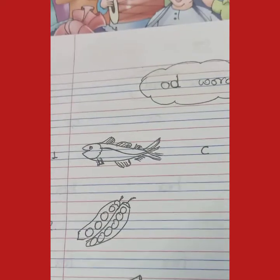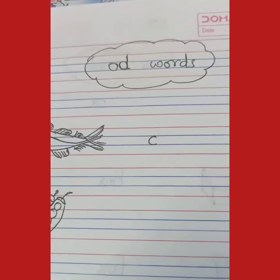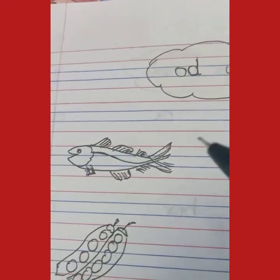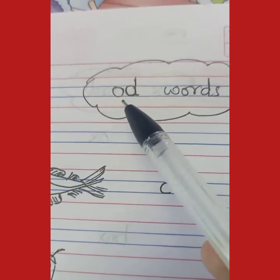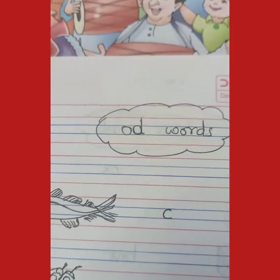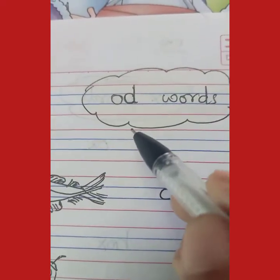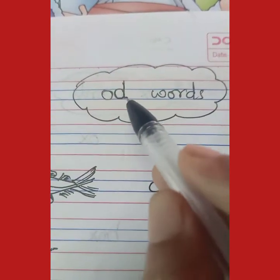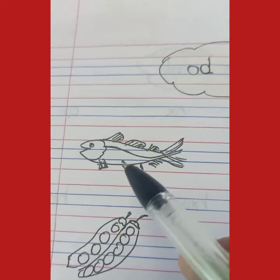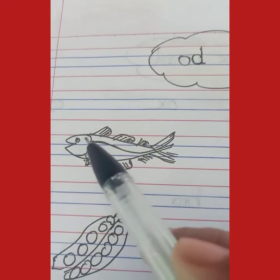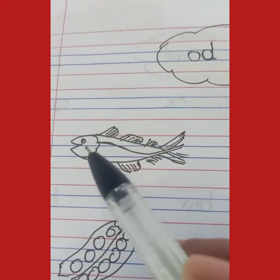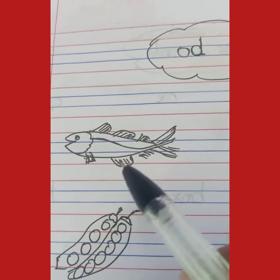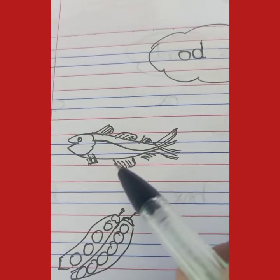Children, now you will learn how to write OD words. You will recognize all the pictures and write their names. The sound of OD comes like 'odd.' See, this is a fish — the name of this fish is Cod. Cod ek tarah ki fish hoti hai.